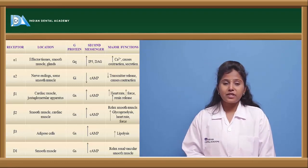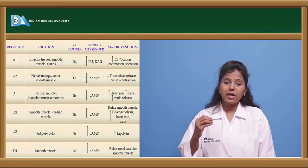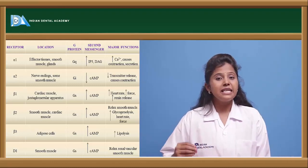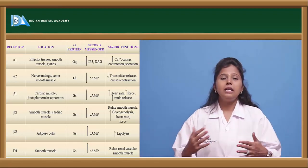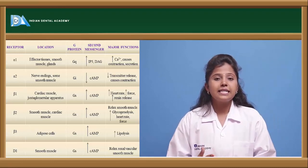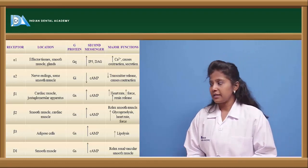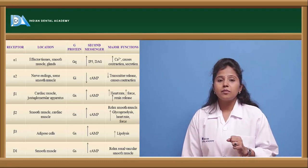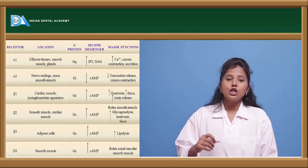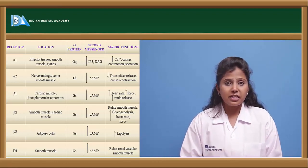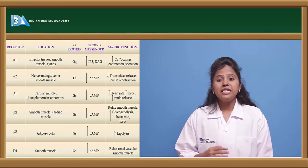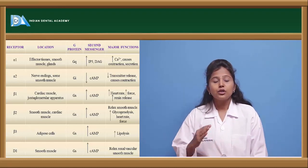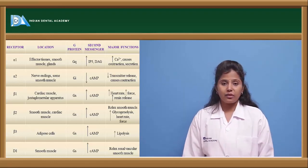Beta-3 receptors are located in adipose tissue and are also Gs-type GPCRs. Increased cyclic AMP levels cause increased lipolysis — breakdown of lipids — since they are present in adipose tissue. Dopaminergic receptors include D1, D2, and D3 receptors. D1 receptors are the most active, located in smooth muscle, and are also Gs-type GPCRs. Increased cyclic AMP causes relaxation of renal vascular smooth muscle.